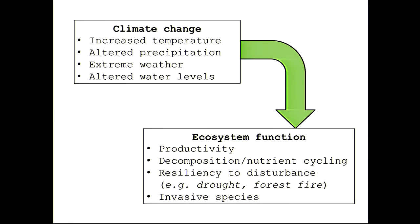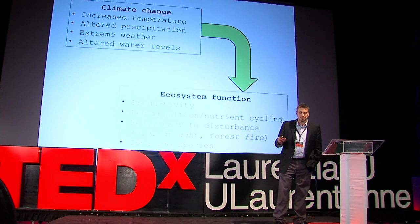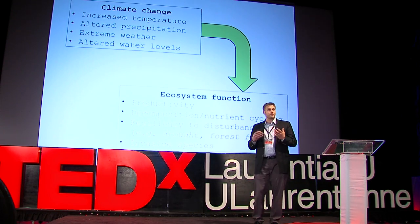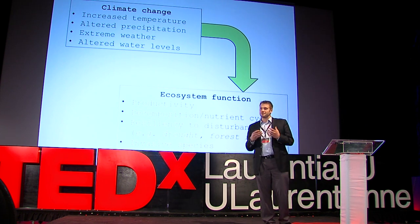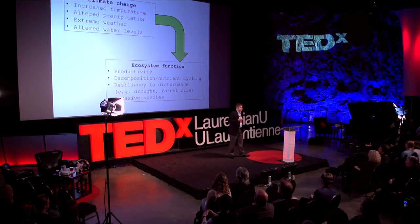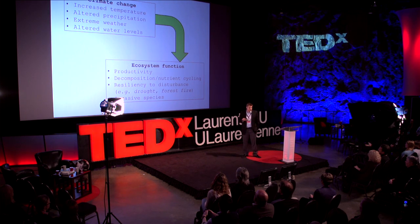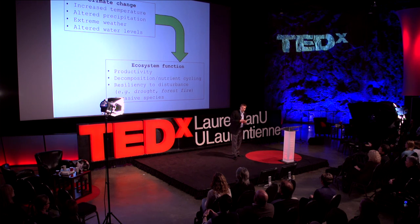We're already starting to see climate change express itself in certain regions. Beyond just increased temperatures, there's been altered precipitation — rainfall and snowfall — more frequent occurrence of extreme weather in some areas, both storms and droughts, and altered water levels of lakes and groundwater. All these changing conditions affect how our ecosystems function — changing the rate at which plants grow, how microorganisms break down dead plant tissues and release nutrients vital for regrowth, and how resistant ecosystems are to natural disturbances like wildfires, droughts, and even attacks by native pests. A main example in Canada is the mountain pine beetle.